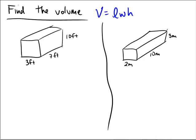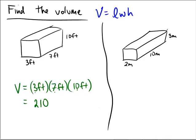Okay, so we have a volume problem. First one on the left has a length of 3 feet, a width of 7 feet, and a height of 10 feet. 3 times 7 is 21, 21 times 10 is 210, and foot times foot times foot would be feet cubed. So the answer here is 210 feet cubed.